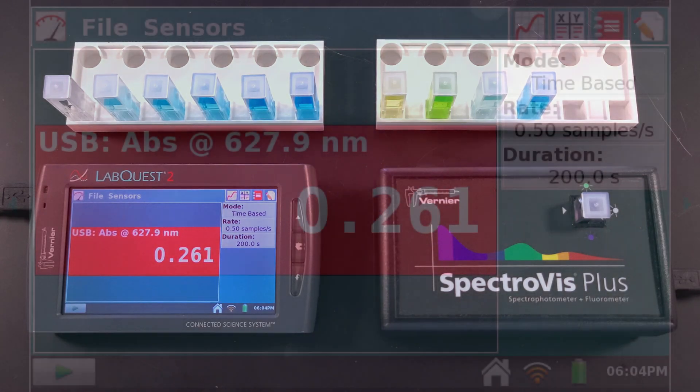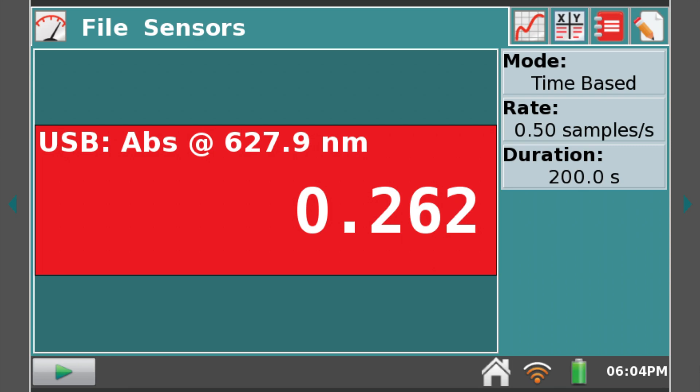Our fifth sample flavor of grape appears to have an absorbance of 0.261.